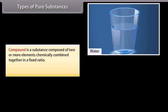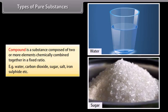Compound is a substance composed of two or more elements chemically combined together in a fixed ratio. For example, water, carbon dioxide, sugar, salt, iron sulfide, etc.